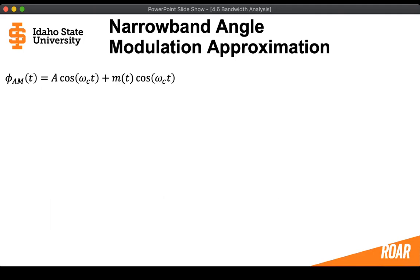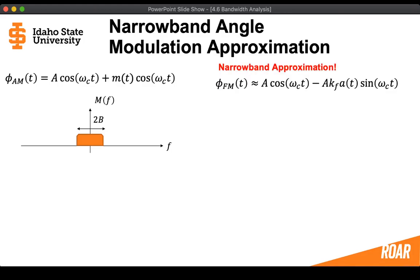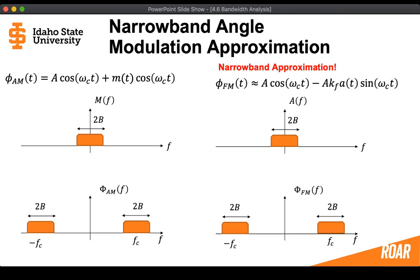All right, so our AM signal looked like this, had some bandwidth like this. So if we look at our narrowband approximation, that's going to have the same bandwidth, A(f), because m(f) and A(f) are going to have the same bandwidth. So if φ_AM looks like this, then φ_FM is also going to look like this, so long as we have applied this narrowband approximation, where we're restricting the absolute value of Kf times A(t) to being much, much less than one.